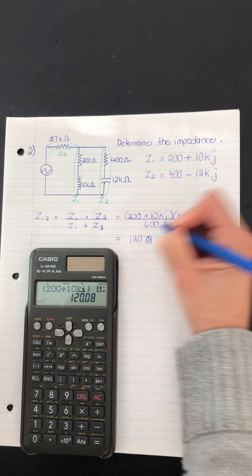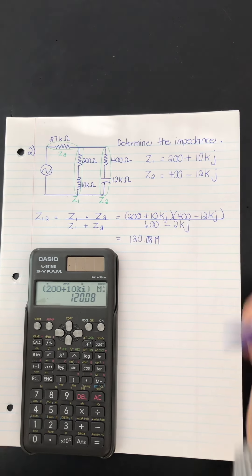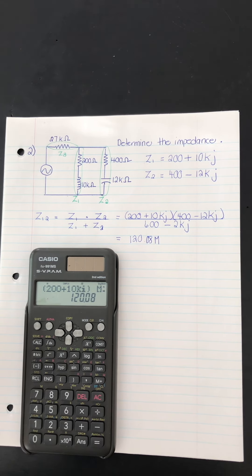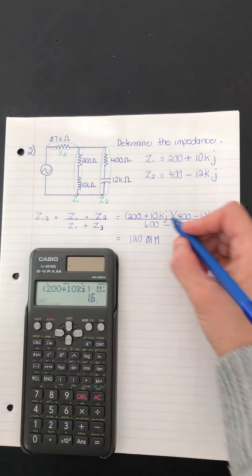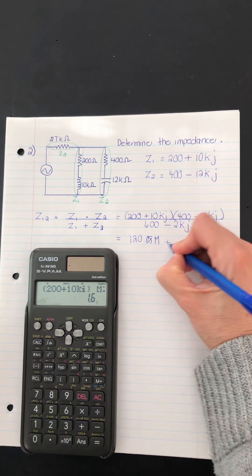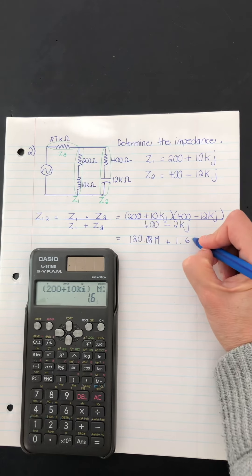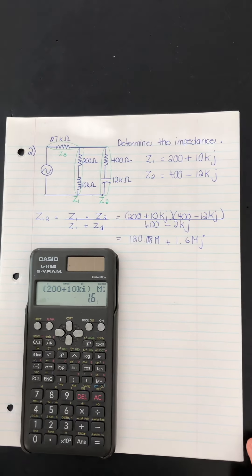120.08 mega. That's the real part. And what's the imaginary part? Shift equals. There it is. So plus 1.6 mega. And it has an I. So there we go. That's the product in the numerator.